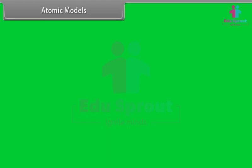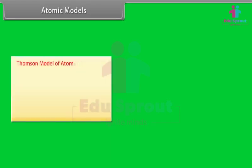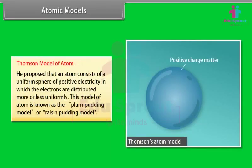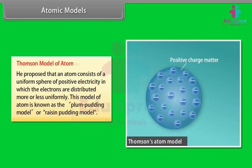Thomson model of atom: He proposed that an atom consists of a uniform sphere of positive electricity in which the electrons are distributed more or less uniformly. This model is known as the plum pudding model or raisin pudding model.